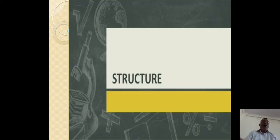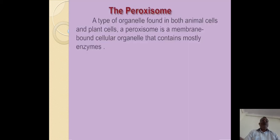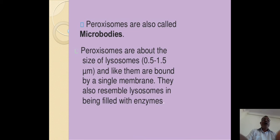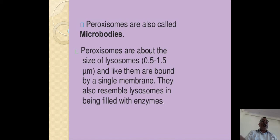Now we come to the structure. The paroxysome is a type of organelle found in both animal cells and plant cells. It is a membrane-bound cellular organelle that contains mostly enzymes. Paroxysomes are also called micro-bodies. They are about the size of lysosomes, 0.5 to 1.5 micrometers, and like them are bound by a single membrane. They also resemble lysosomes in being filled with enzymes.